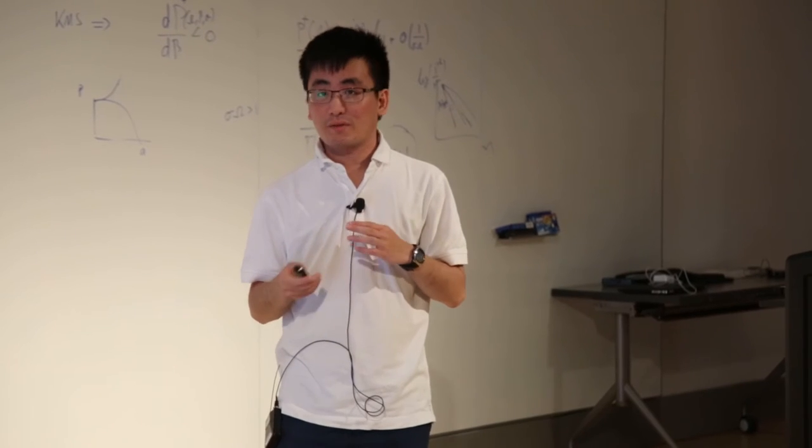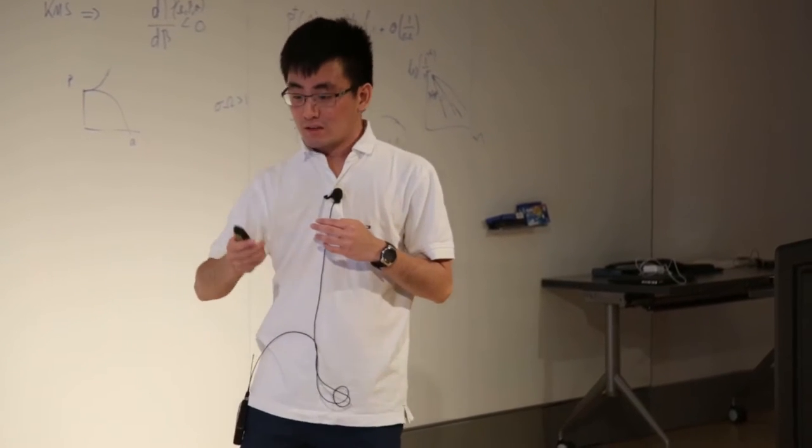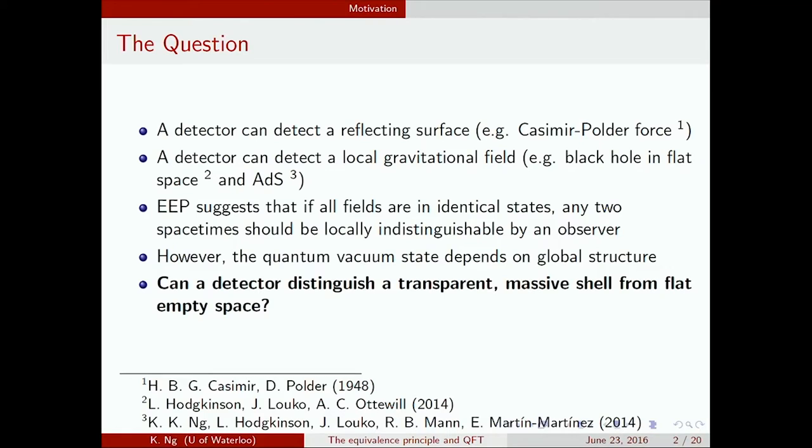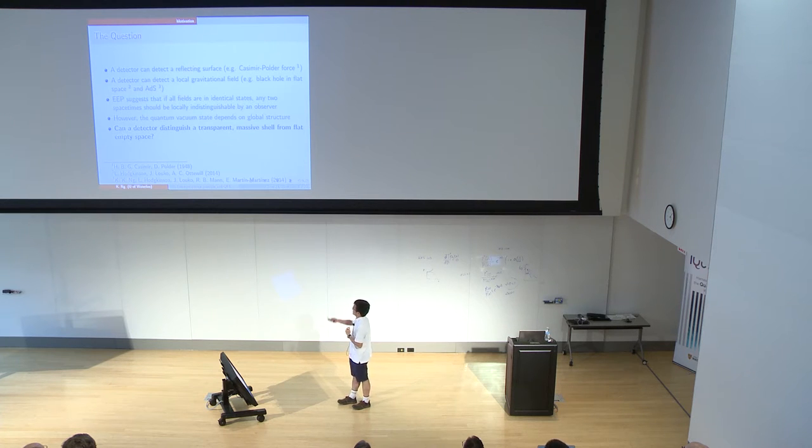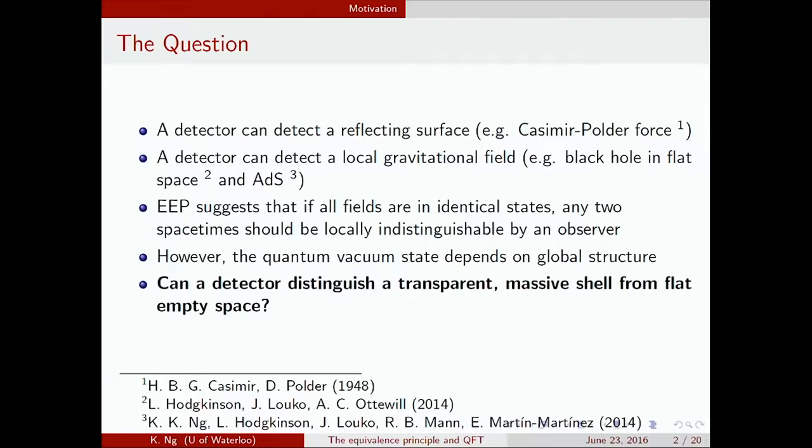We know from a paper in 1948 by Casimir and Polder that a detector can detect a reflecting surface. A detector can also detect a local gravitational field, for example from work done by Hodgkinson, Leuko, and myself on black holes in flattened AdS space. Einstein's equivalence principle suggests that if all fields are in identical states, the two space-times should be locally indistinguishable.